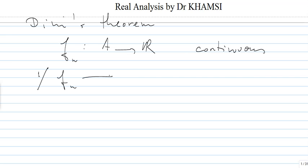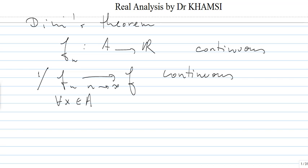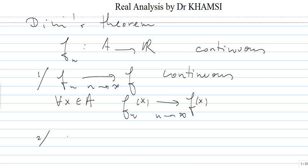We assume that Fn converges pointwise to F, which is also continuous, as n goes to infinity. Pointwise means for every x in A, Fn(x) goes to F(x) as n goes to infinity. The most important property is also to assume that the Fn's are decreasing — for any x in A.